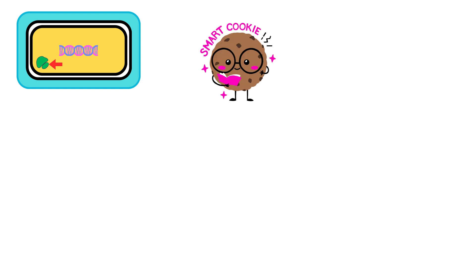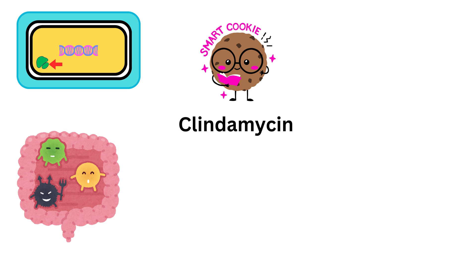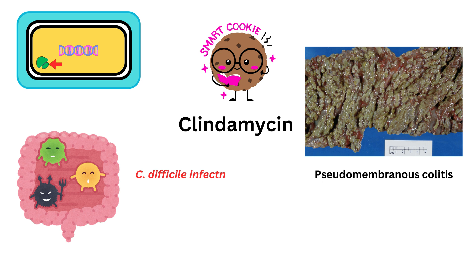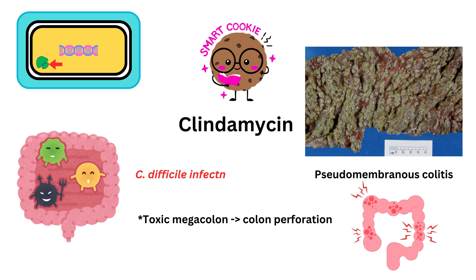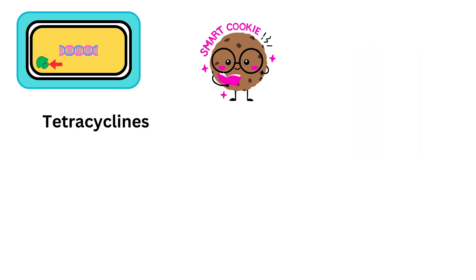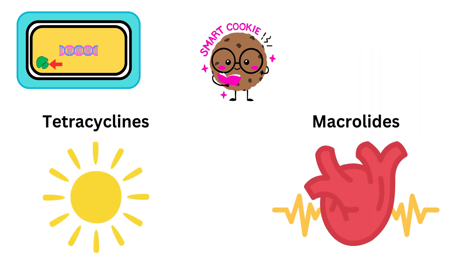A few important exam points: clindamycin can disrupt the natural balance of gut flora, increasing the likelihood of C. difficile infection. If severe, it can lead to pseudomembranous colitis and life-threatening complications like toxic megacolon or colon perforation. Tetracyclines can cause photosensitivity, and macrolides can cause arrhythmias due to QT interval prolongation.